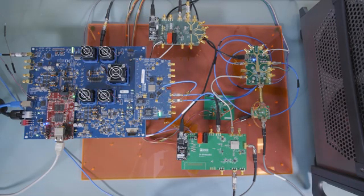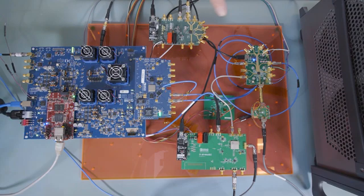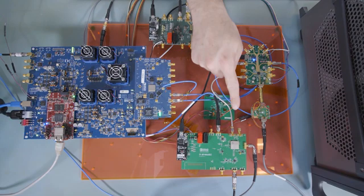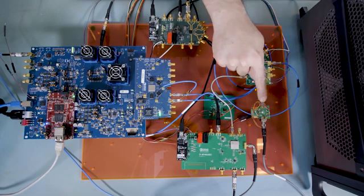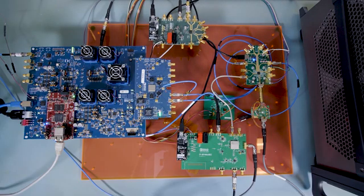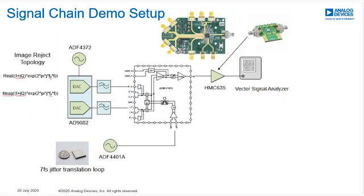In this setup, we are constructing a millimeter wave transmit chain using a high-speed digital-to-analog converter, a millimeter wave up converter, an ultra-low phase noise translation loop device, and an amplifier. We are using a complex IF topology in this demo. With the complex IF topology, the filtering can be simplified while achieving a good overall performance.